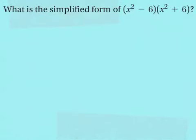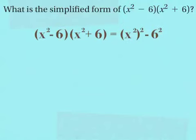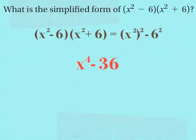This example asks for the simplified form of x squared minus 6 times x squared plus 6. Notice that the two terms, x squared and 6, appear in both binomials. I need to square both terms and find the difference: x squared squared minus 6 squared. x squared squared — a power to a power — gives me x to the fourth, and 6 squared is 36. I can't combine these because they're not like terms, so my answer is x to the fourth minus 36.